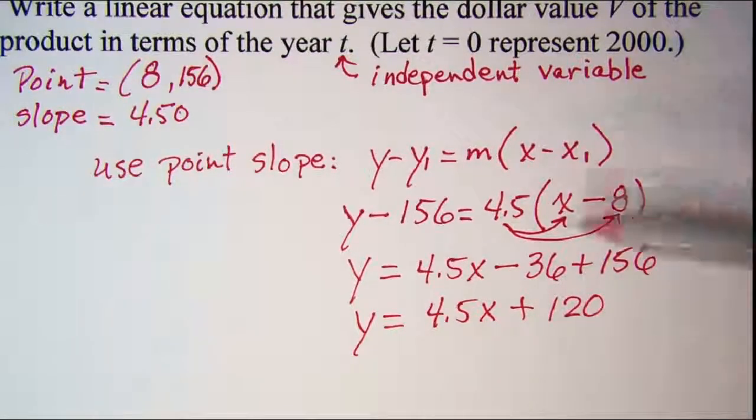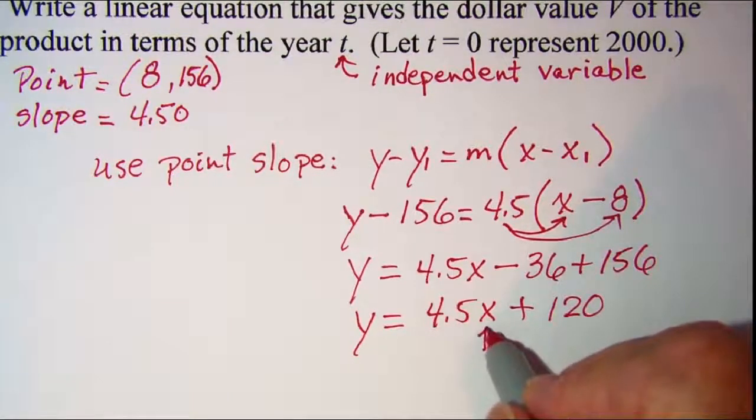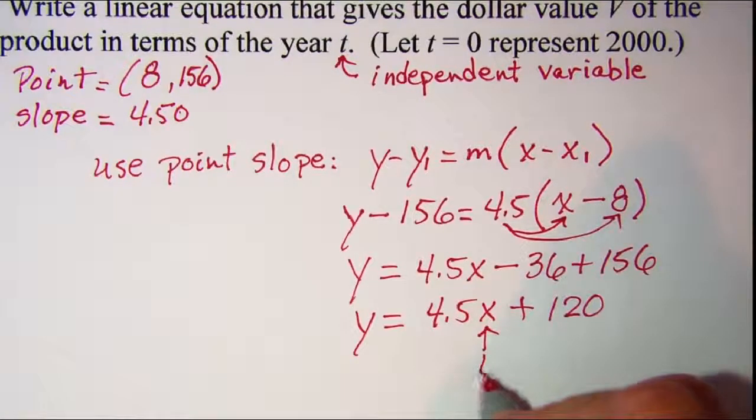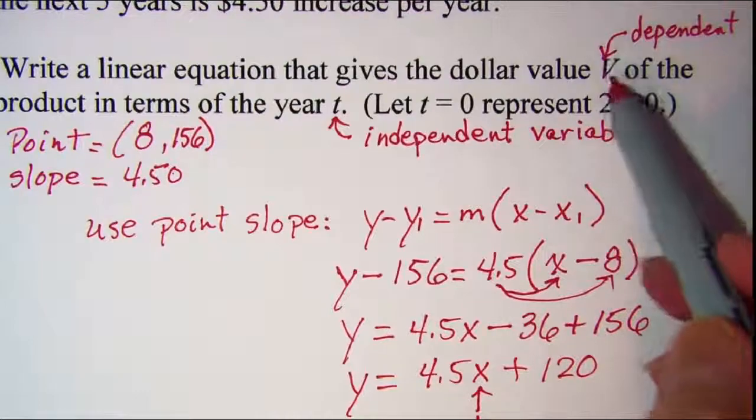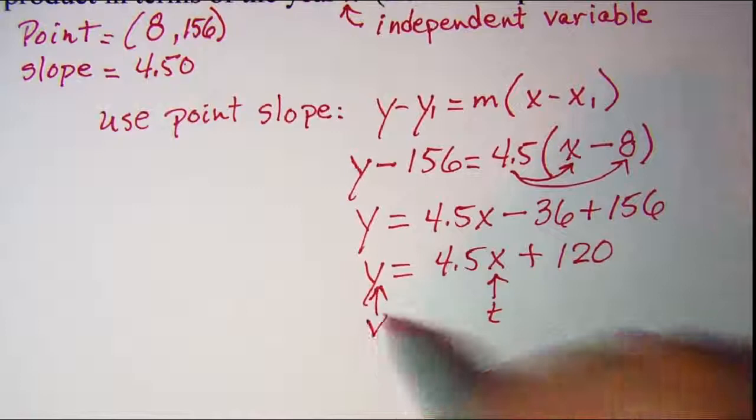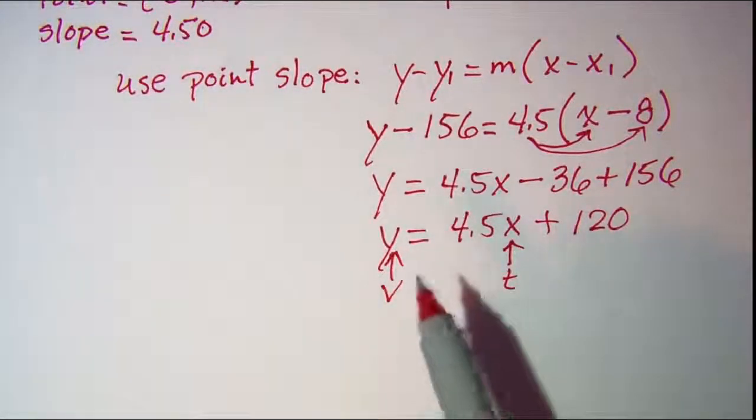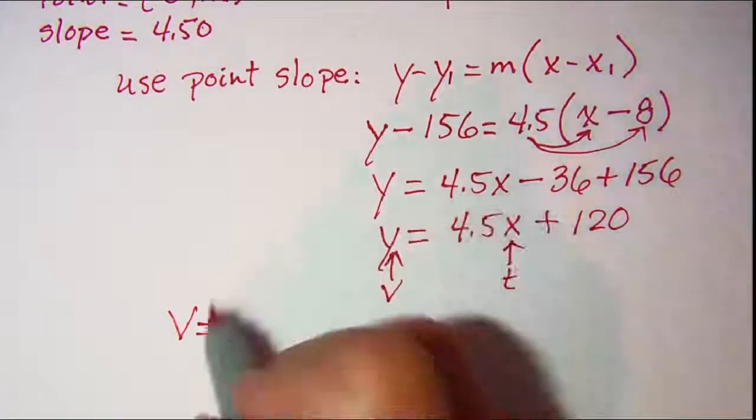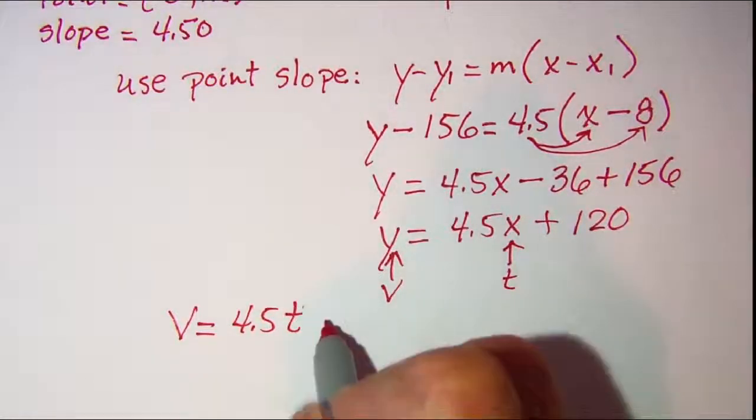Now this was all the mathematics for the problem. Remember that my independent variable was t and my dependent variable was v or value. So now to write my equation in terms of the problem, I would write v is equal to 4.5t plus 120.